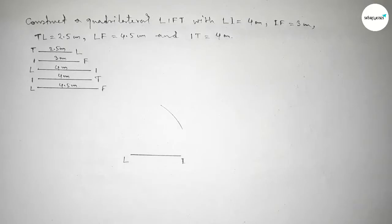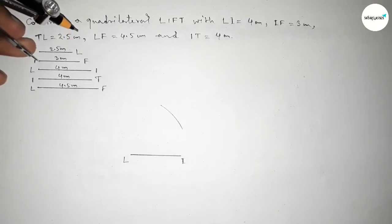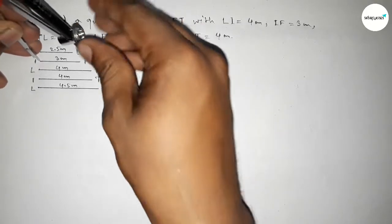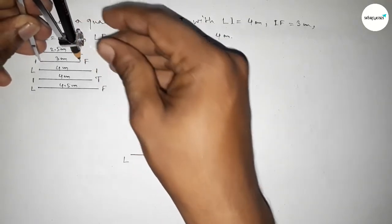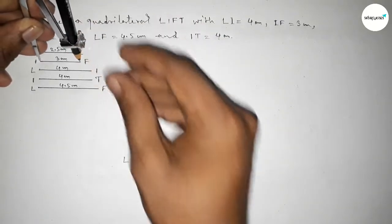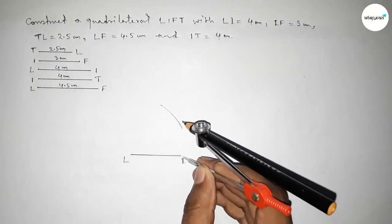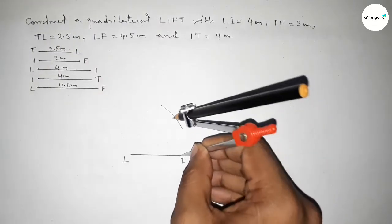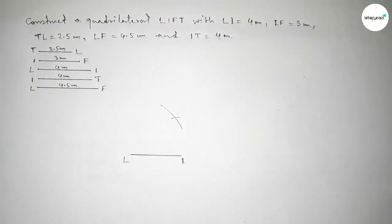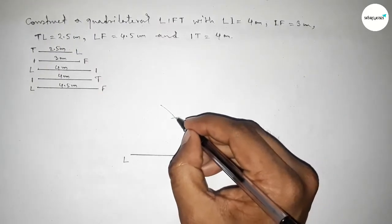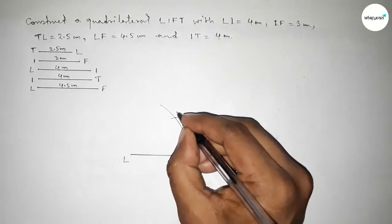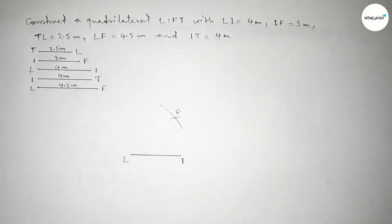Then drawing the line IF equal to 3 centimeter by using the compass and putting the compass on the point I and cutting here. So both the curves intersect at a point F. Next taking the length...